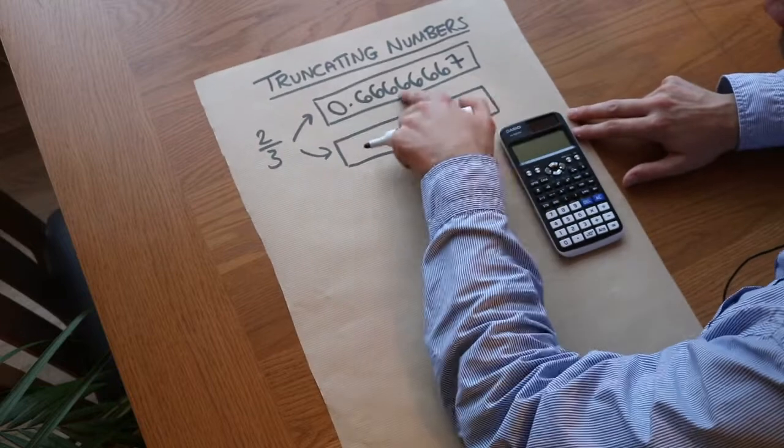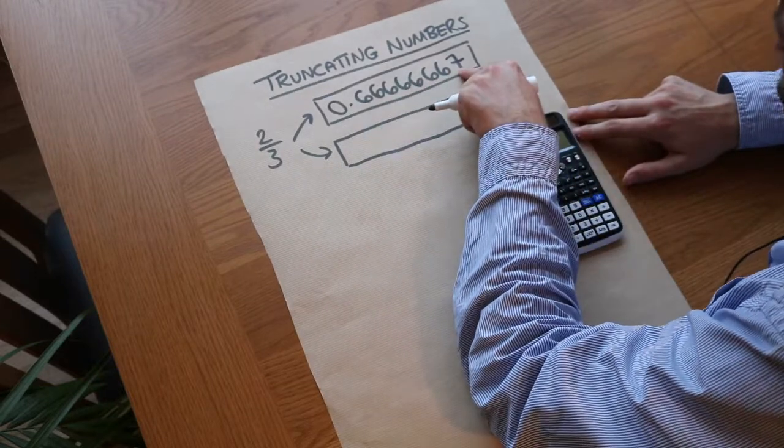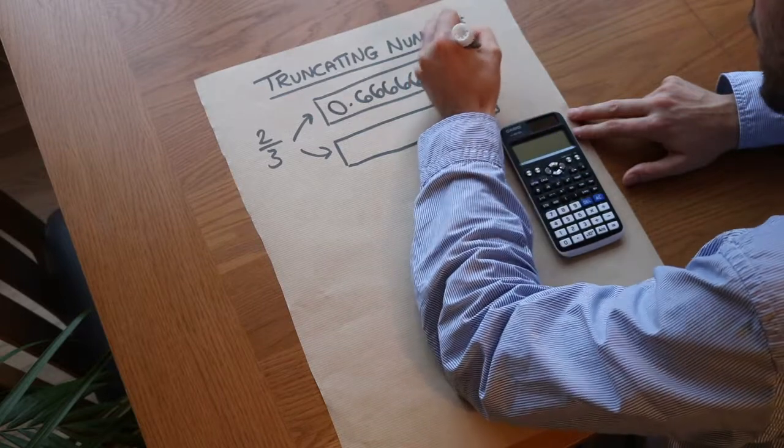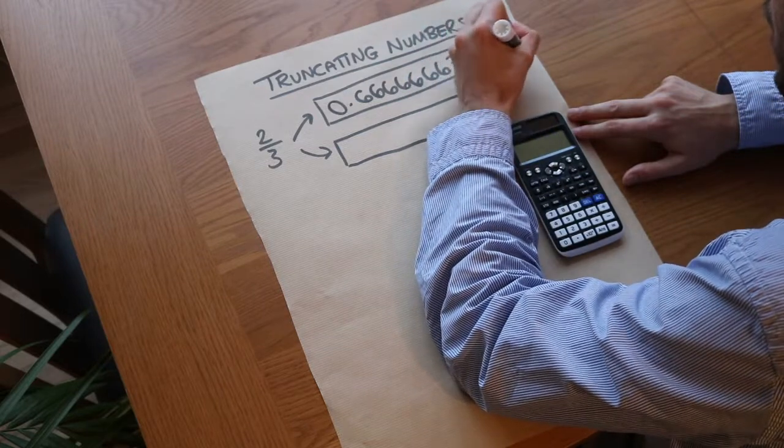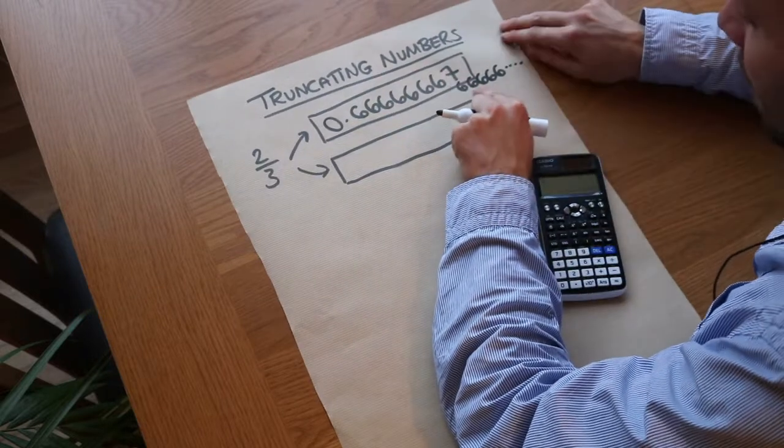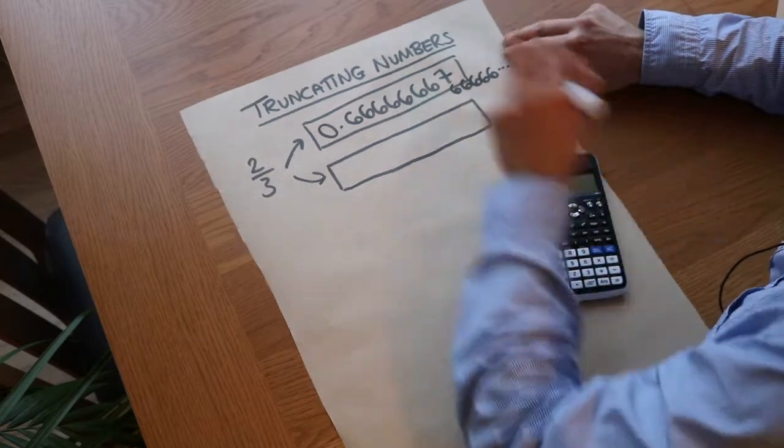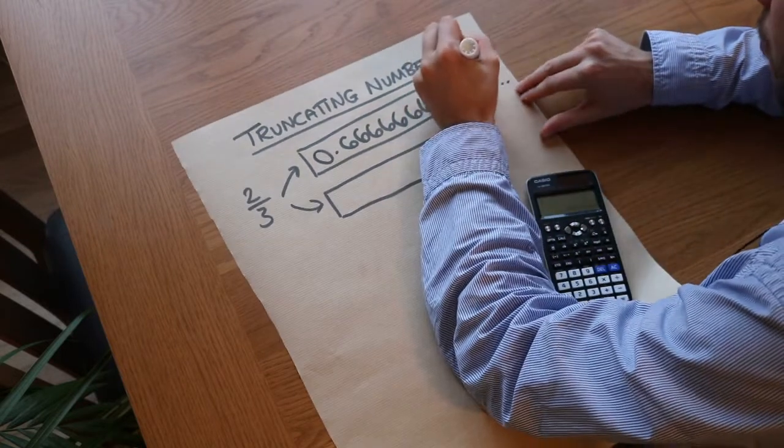What's effectively happening is that your calculator is rounding it to this number of decimal places. Here the digit is actually six, and then you've got some more sixes going on forever. But because it's rounding up to this digit, it checks the next digit, and because that digit is greater than or equal to five, that six goes up to seven. So this is rounded.